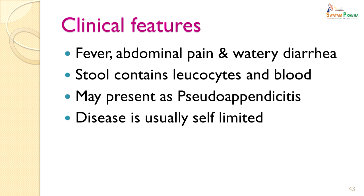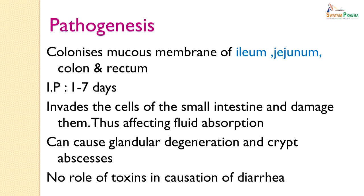The clinical features of Campylobacter: it is an inflammatory diarrhoea with no toxin directly involved — it does not present as a toxigenic diarrhoea. It presents with fever, abdominal pain and watery diarrhoea. The stool contains leukocytes and blood; it may also sometimes present as pseudo-appendicitis. The disease is usually self-limiting and does not require treatment. Campylobacter is taken in with food or water and colonizes the mucous membranes of the ileum, jejunum, colon and rectum — the ileum and jejunum are the more common sites. Incubation period varies from 1 to 7 days. It invades cells of the small intestine, damaging them and affecting fluid absorption. It can cause glandular regeneration and crypt abscesses. There is no role for toxins in the causation of diarrhoea with Campylobacter.